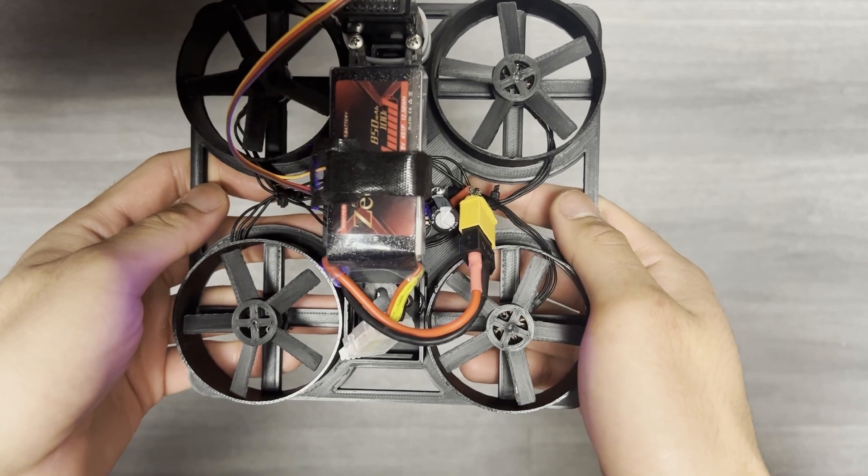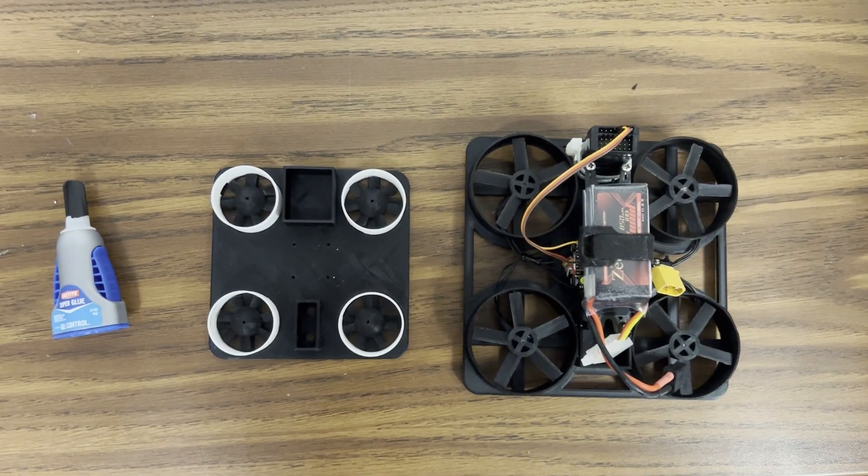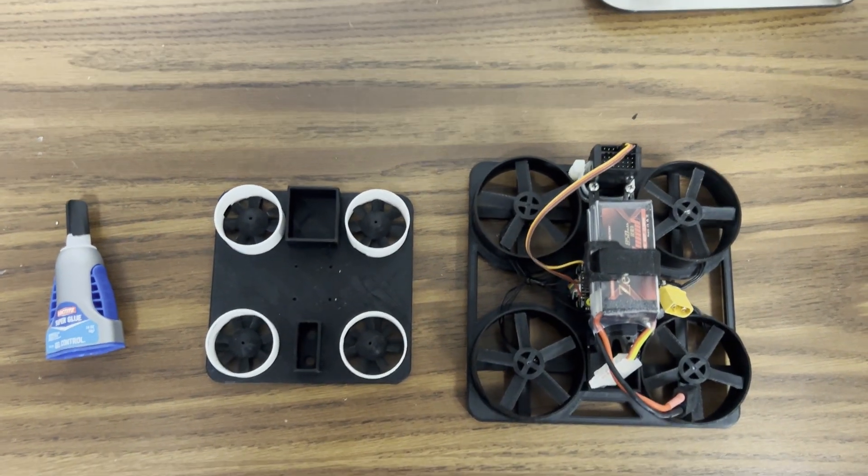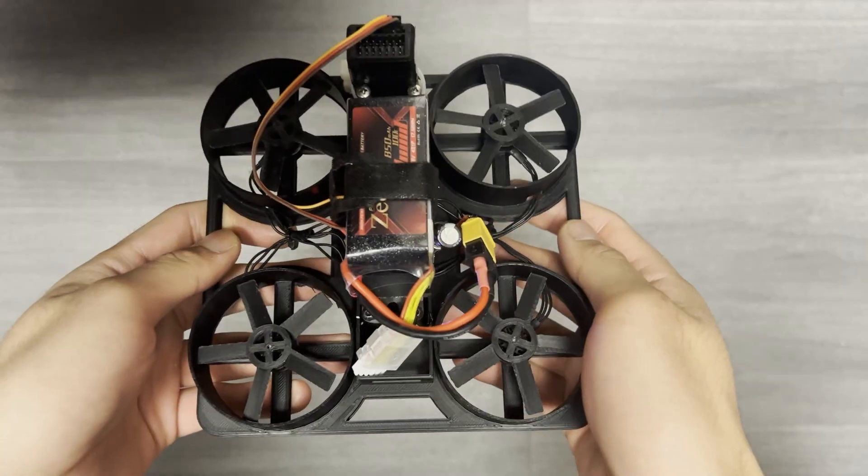I forgot to actually weigh out the frames, but according to the Cura slicer, there's only a 10g difference, which isn't too bad considering I doubled the EDF size.